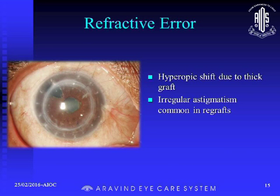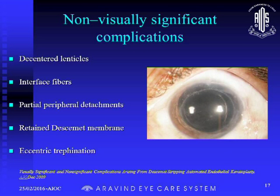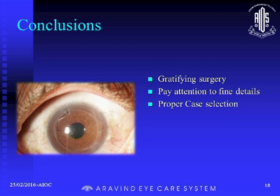Graft rejection is managed the same way as in PK. But graft infection is more dangerous here because the nidus is almost very close to the anterior chamber. As long as it is within the lamellar space, better to go ahead and do a PK and remove that nidus instead of waiting and replacing only the graft and exposing the anterior chamber to infection. Non-visually significant complications can occur, but pupillary block after rebubbling — if too much anterior chamber tension was produced — cannot really be called non-visually significant, because the patient may end up with significant photophobia. This is a gratifying surgery, but we have to pay attention to fine details, and proper case selection plays a major role in avoiding complications. Thank you.